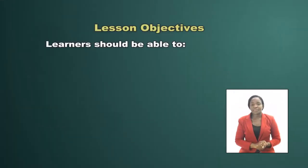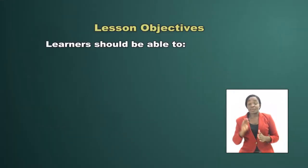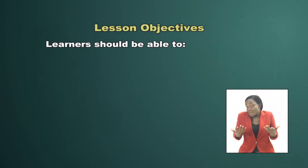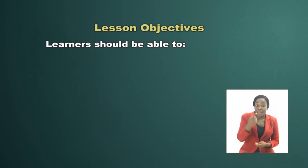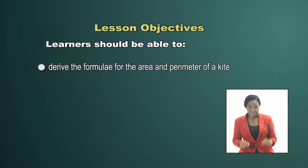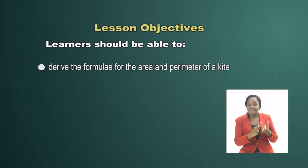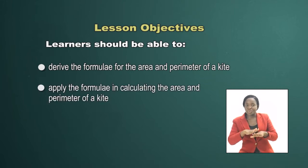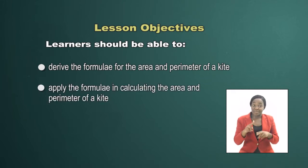So after watching this lesson you may or may not be able to make or fly a kite, but at least be able to derive the formulae for working out the area and perimeter of a kite and to apply those formulae in calculating the area and perimeter.